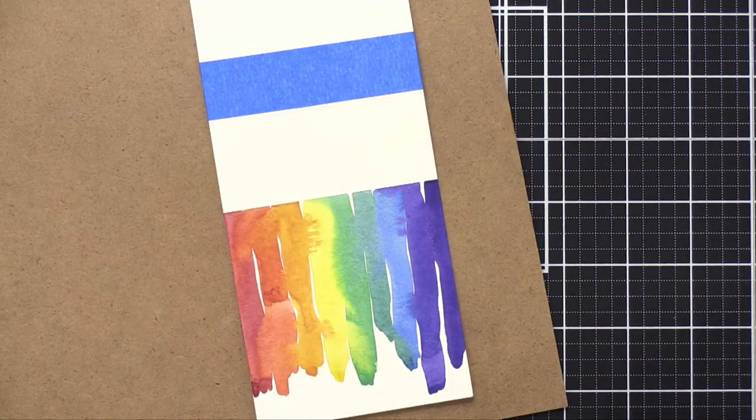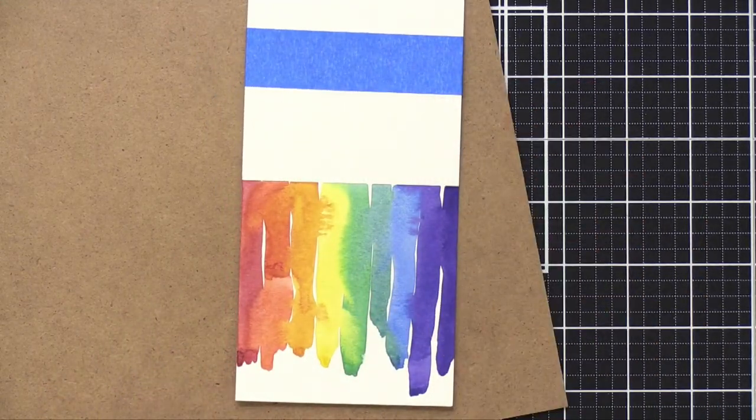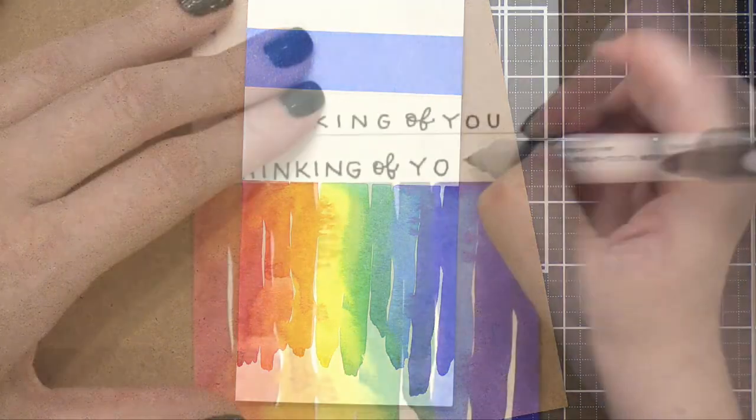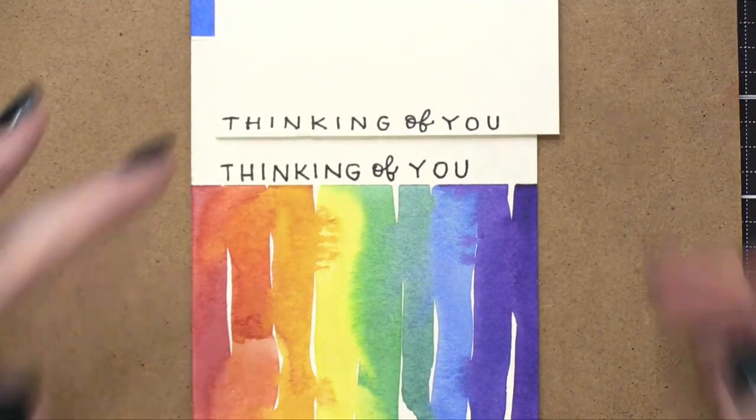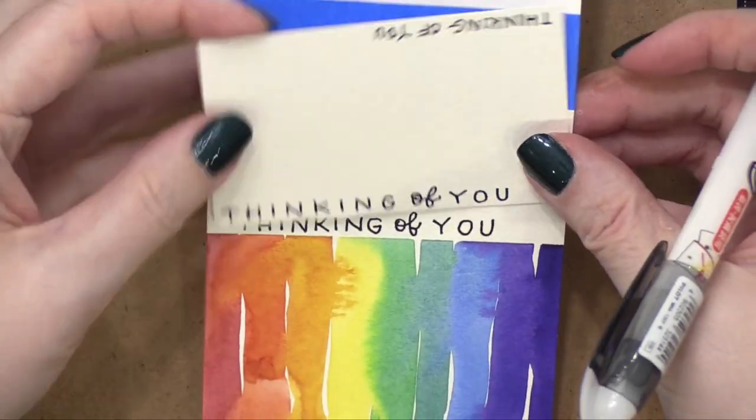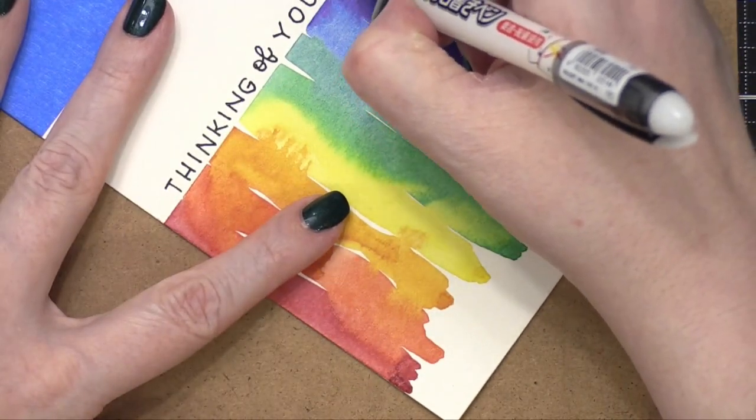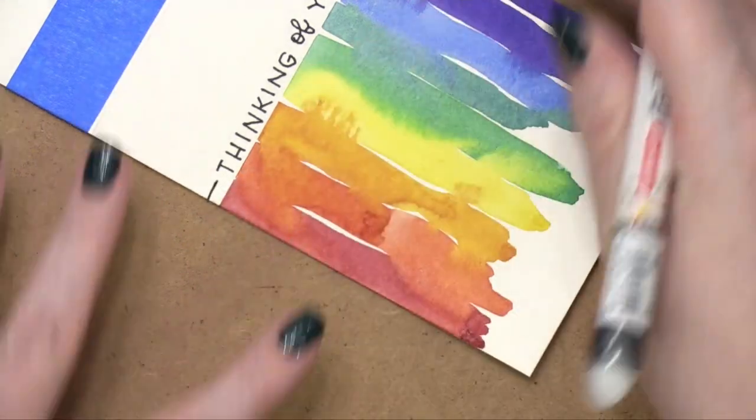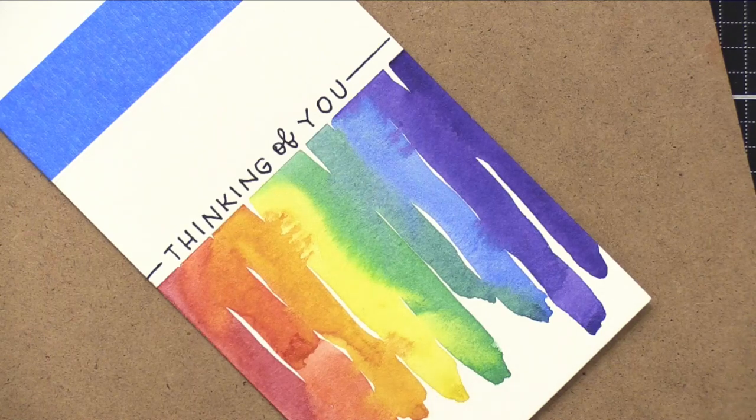So now just to finish this card, I'm going to write my greeting right across that line. It can be whatever you want. I'm going to have mine be thinking of you. Apparently I wrote a little bit more condensed, but that's totally okay. It can be a little bit off to the side. In fact, maybe I'll draw a little line right there. You know what? I'm not loving that right there.